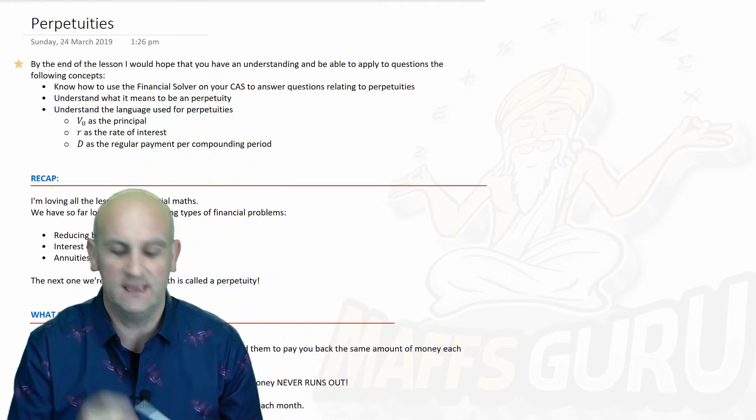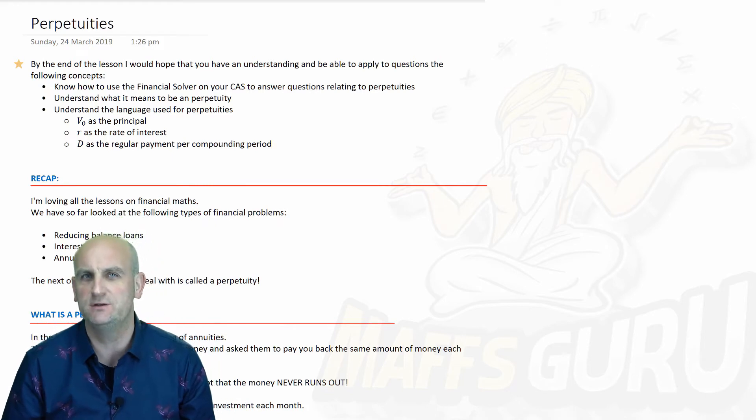Okay, here we go. Perpetuities. What on earth is a perpetuity? In the previous video we looked at annuities. I quoted the idea that the Australian pension scheme was an annuity where we put loads of money in, and when we retire the bank effectively pays us out.